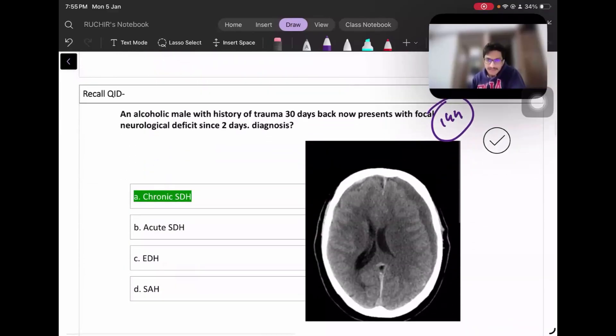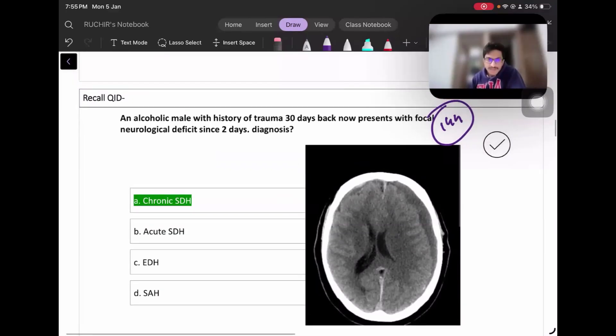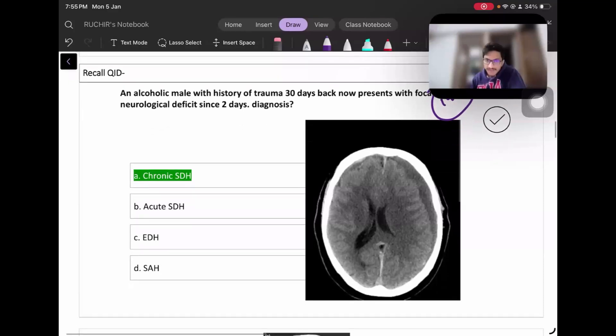Let's move on to the next question about esophagitis grade D with hiatal hernia - best answer is Nissen fundoplication. This question is about an alcoholic male with history 30 days back, now presenting with focal neurological deficit. The CT is somewhat like this - hypodens lesion, that is chronic SDH. No query or discrepancy in this, right?